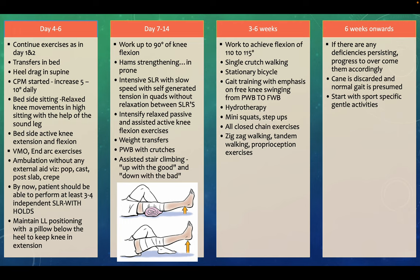Days 7 to 40: aim to achieve at least 90 degrees of knee flexion. Hamstring strengthening in prone position, intensive SLR, and intensified relaxed passive and assisted active knee flexion exercises are performed. Weight transfers and partial weight bearing with crutches are introduced. Assisted stair climbing is taught — go up with the good leg first and come down with the bad leg.